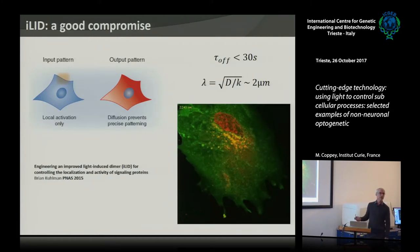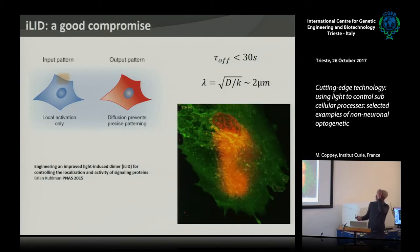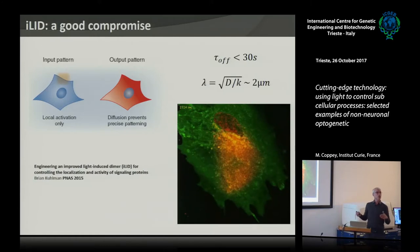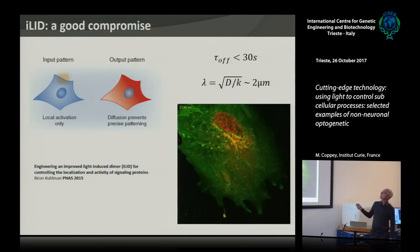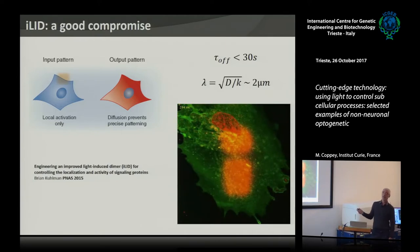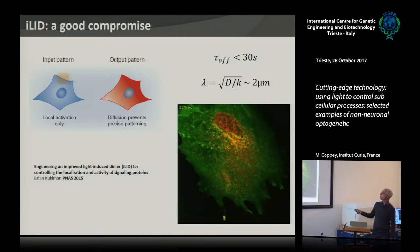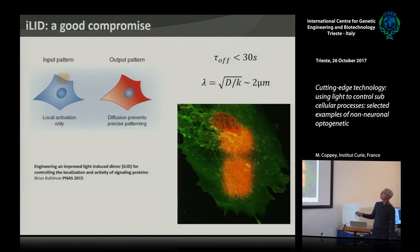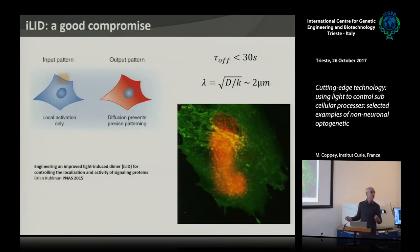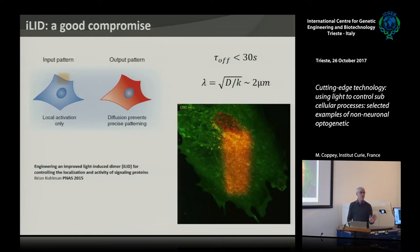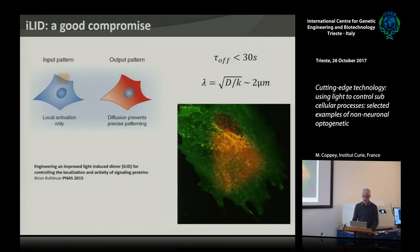I think a good option is maybe to use one of the new dimerizers — specifically one called iLID, developed by Brian Kuhlman. I really encourage you to look at this one. It's a bit like the CRY2 system for membrane localization, but now the lifetime of the complex is 30 seconds instead of three minutes. This means the length scale is much shorter. Here in a mammalian cell they spelled out the letters of 'iLID' on the plasma membrane, and you see it's pretty sharp and precise. A great system for achieving good resolution with a simple setup.